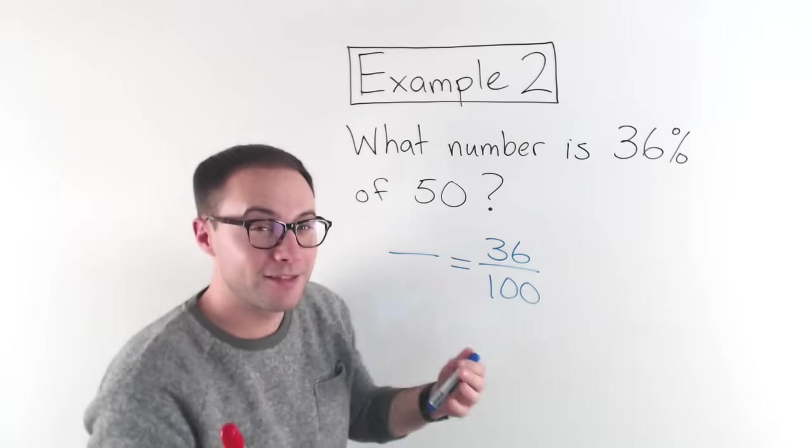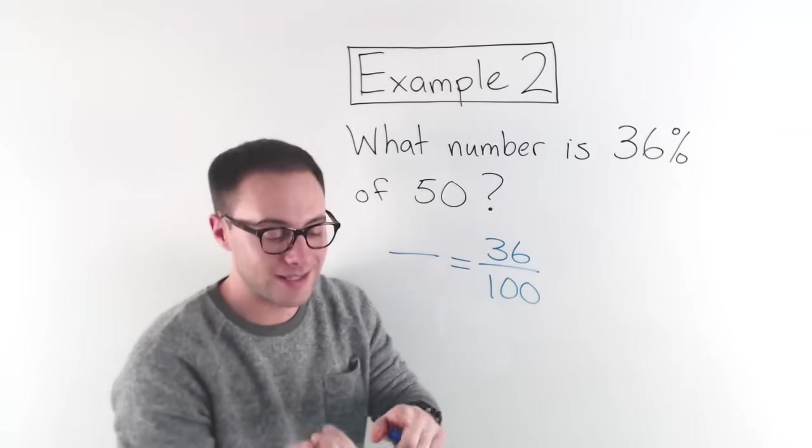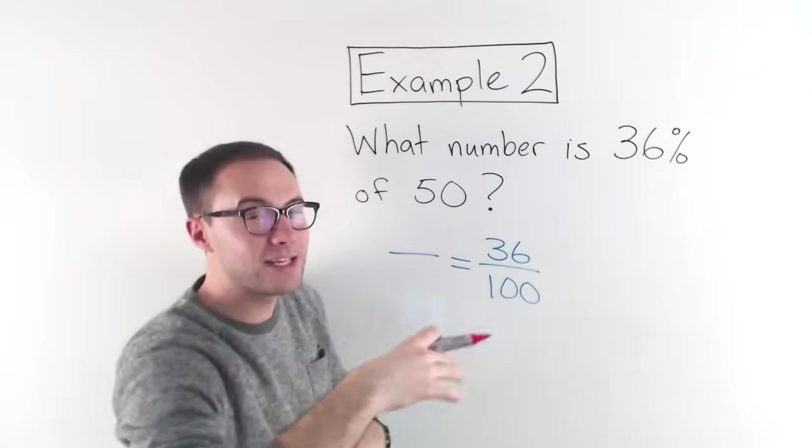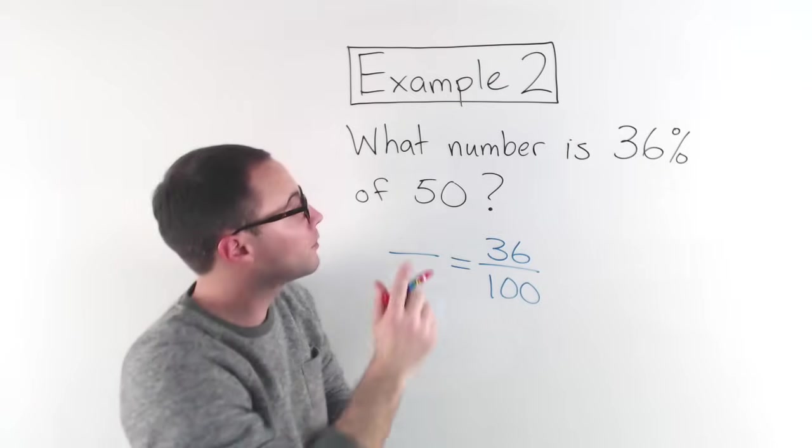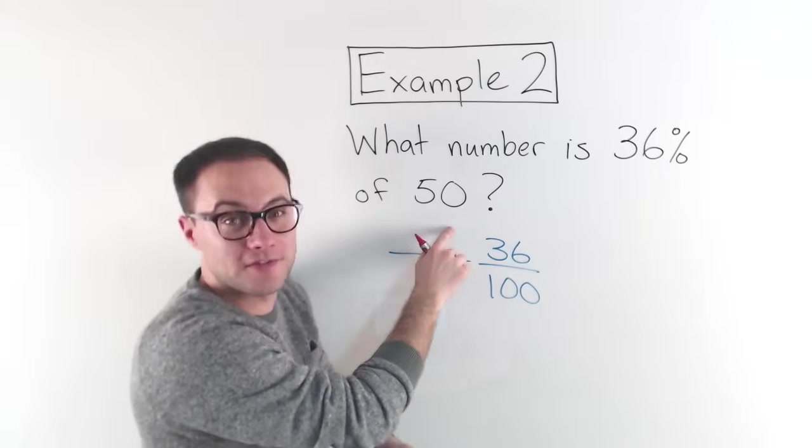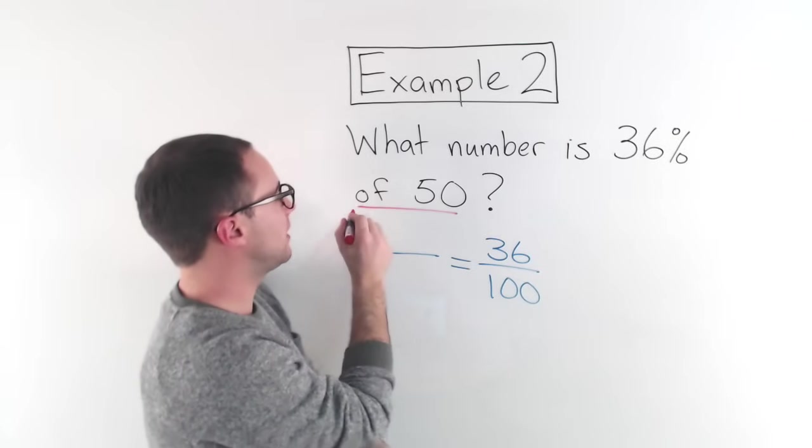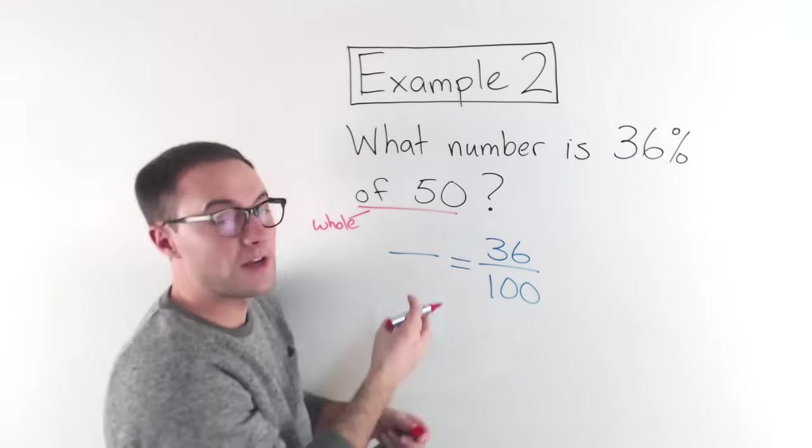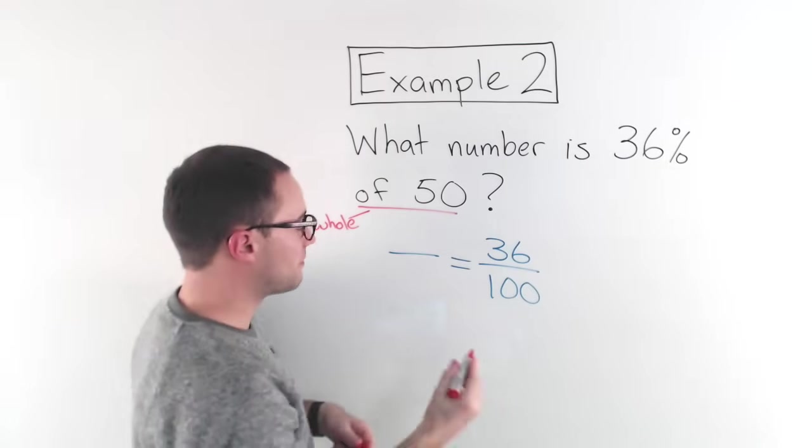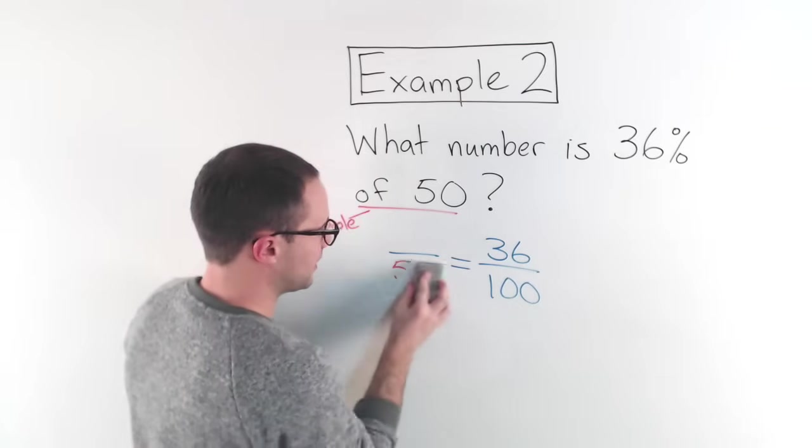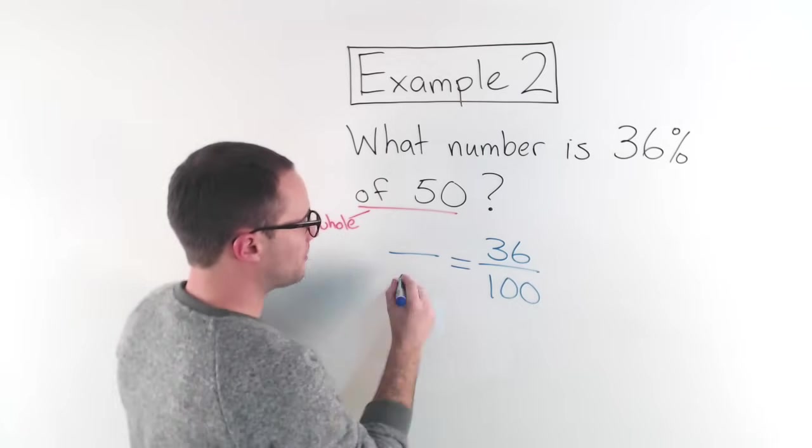The key is to look for those key words is or of. Well, here's is. What number is. Remember is represents the part. Okay. Well, what number is. That's what I don't know. Of 50. And of 50, again, that is the whole. Okay. So 50 is the whole, which means it needs to go in my denominator. That needs to go in my denominator.